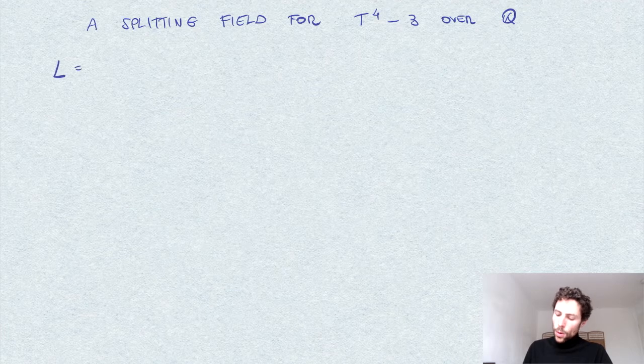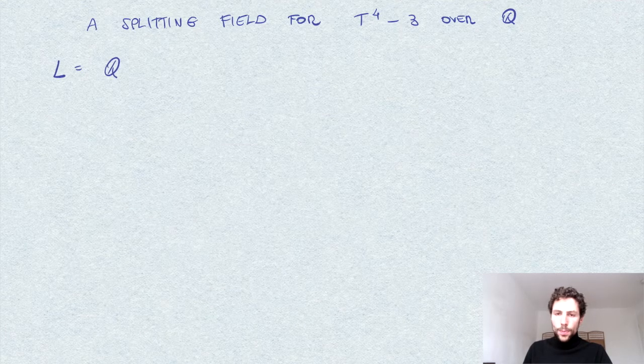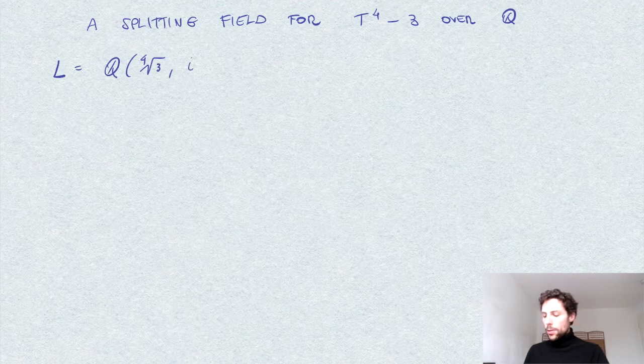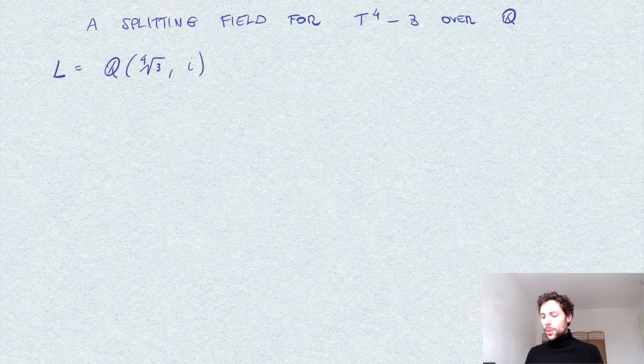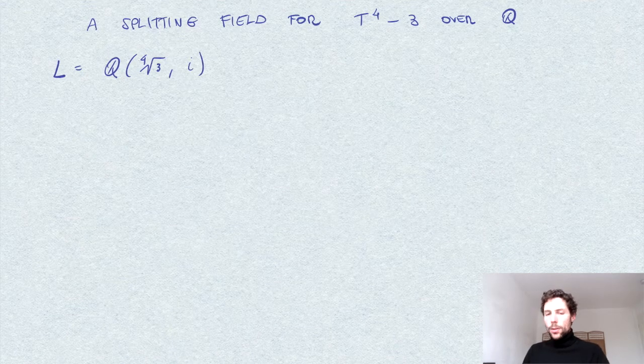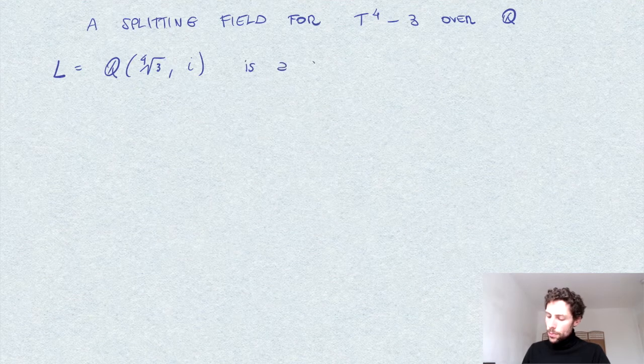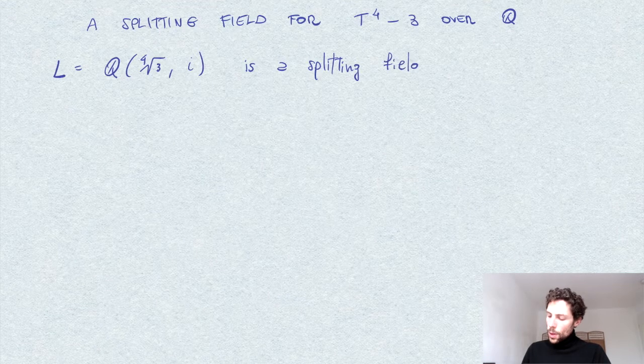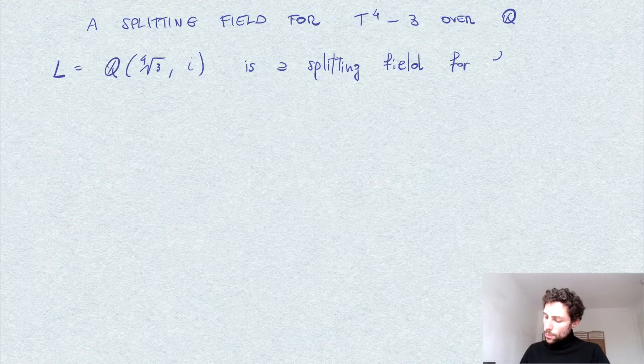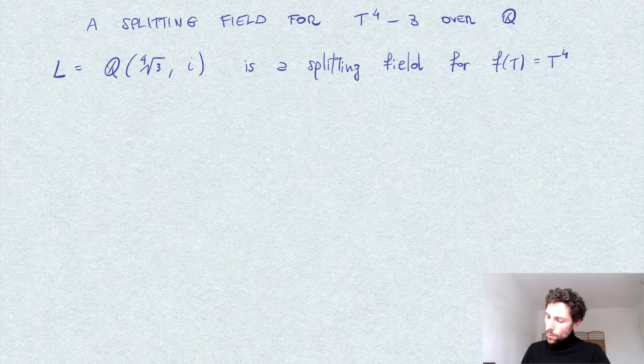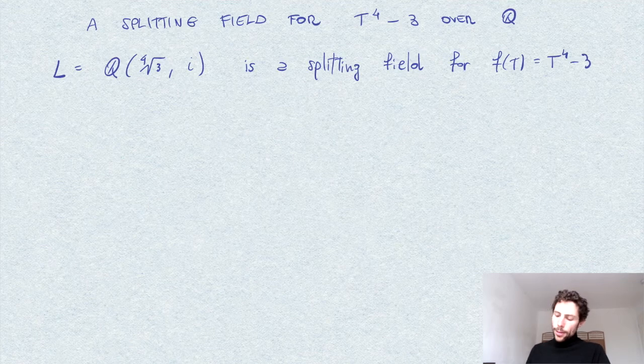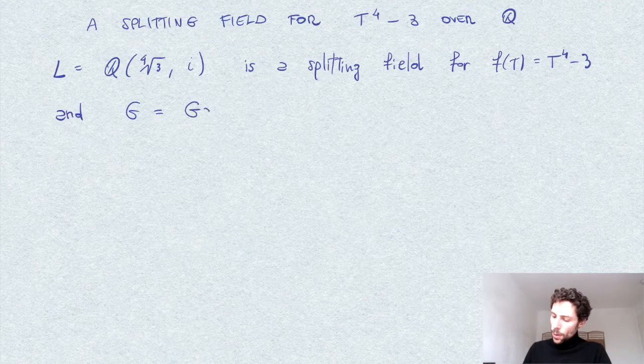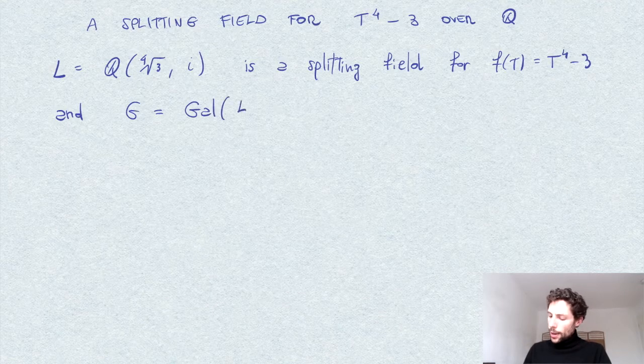So more precisely, we want to study the field extension of Q given by the fourth root of 3 and the square root of minus 1, which I denote by i. And we will observe that this is a splitting field for this polynomial over Q and its Galois group, which I would denote by G, the Galois group of the extension L over Q.